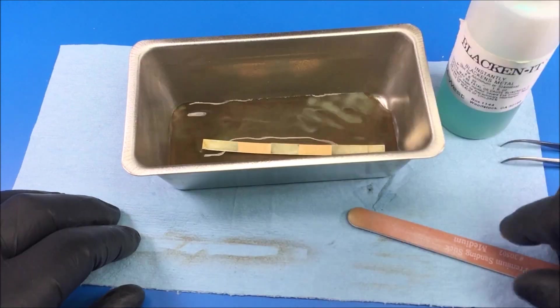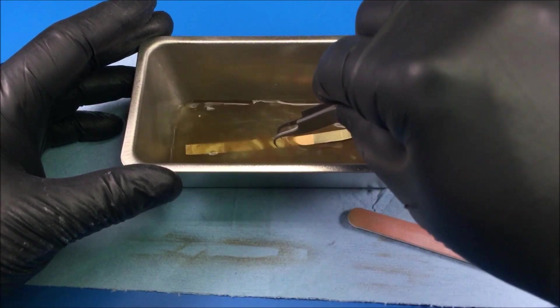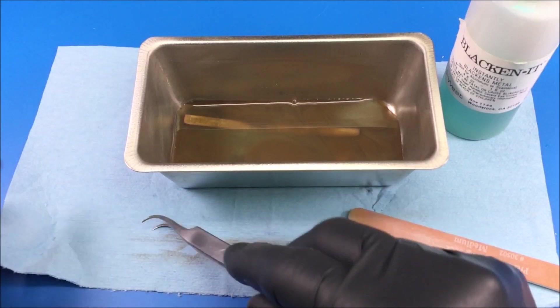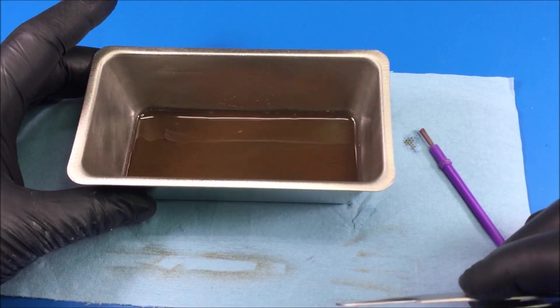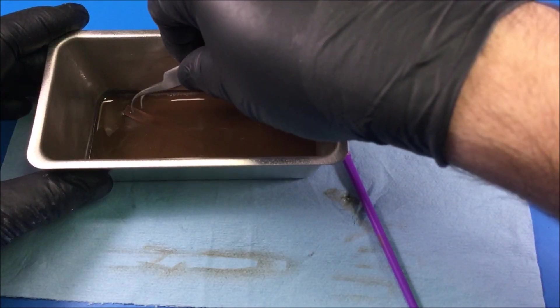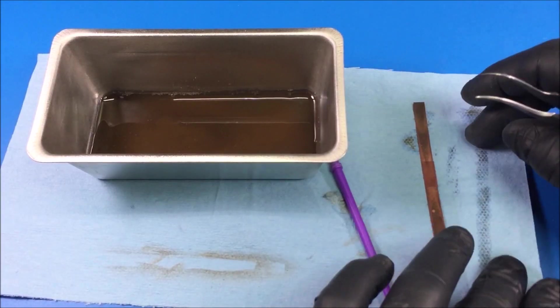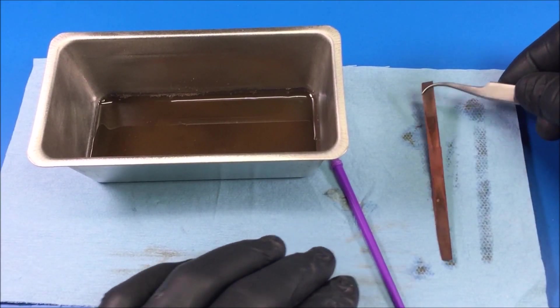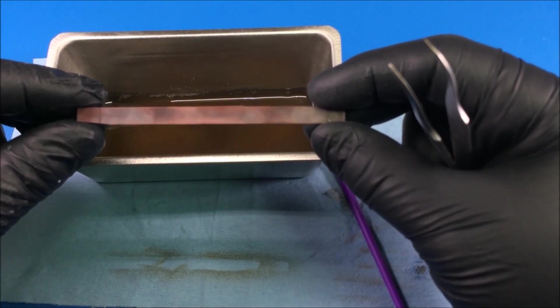What you want to do - I've already done this side over here - is sand that photo etch, give it a light sand, and then you just pop it into the tray, make sure it's fully submerged. We'll come back and I'll show you what that looks like.